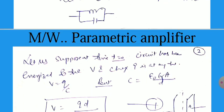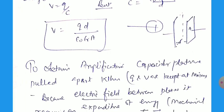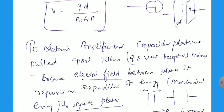Let us suppose that at t equal to 0 the circuit has been energized, so the voltage V and charge Q — we have given some energy or a jerk to this tank circuit at t equal to 0. At t equal to 0, V equal to Q by C, and we know that C equal to epsilon_r times A divided by d. So the potential difference between the plates is Q times d divided by epsilon_0 times epsilon_r times A. To obtain amplification, the capacitor plates are pulled apart. When the positive and negative plates are moved apart, Q and V are kept at the maxima because the electric field between the plates requires energy to separate the plates.